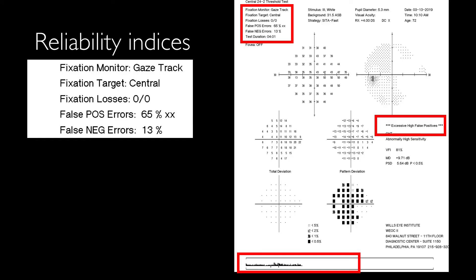For checking the reliability of the visual field test, we have several locations in the printout to check. At the top there's a box that shows the fixation monitor, fixation losses, false positive and false negative errors.